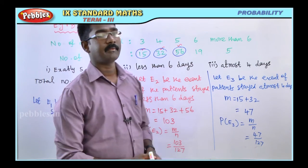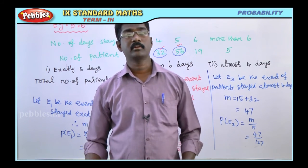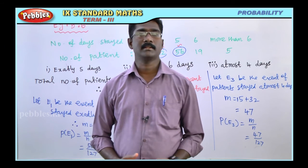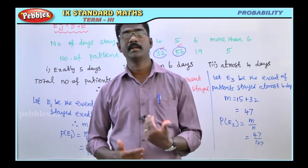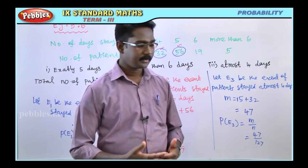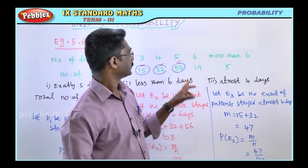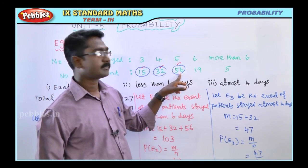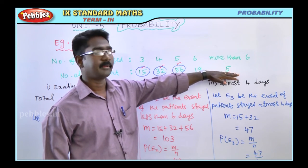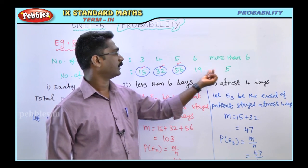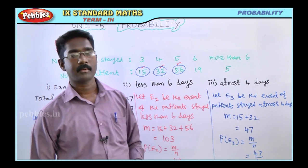For the fourth problem, at least 5 days: at least 5 days includes 5 days (56 patients), 6 days (19 patients), and more than 6 days. So we include all of those patient counts together to find the favorable outcomes for at least 5 days.